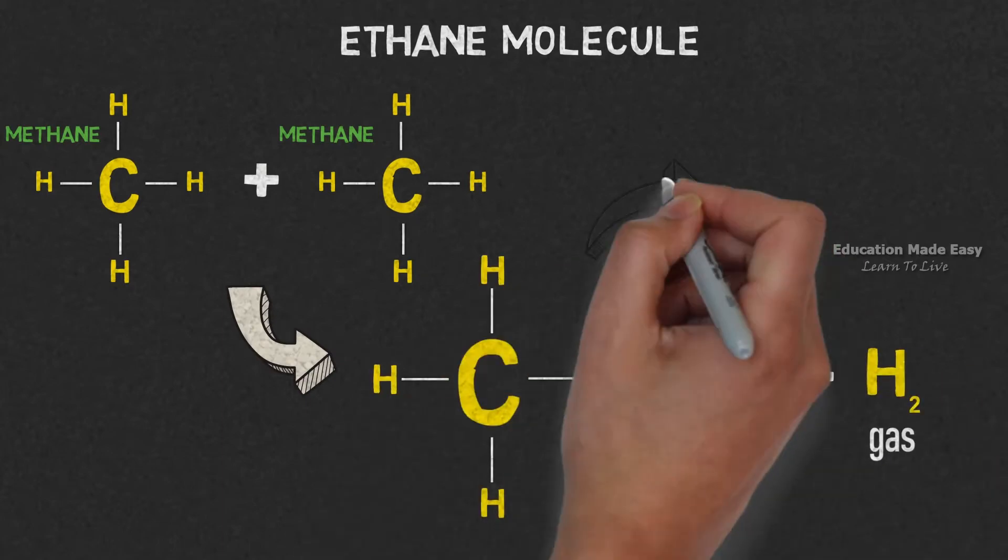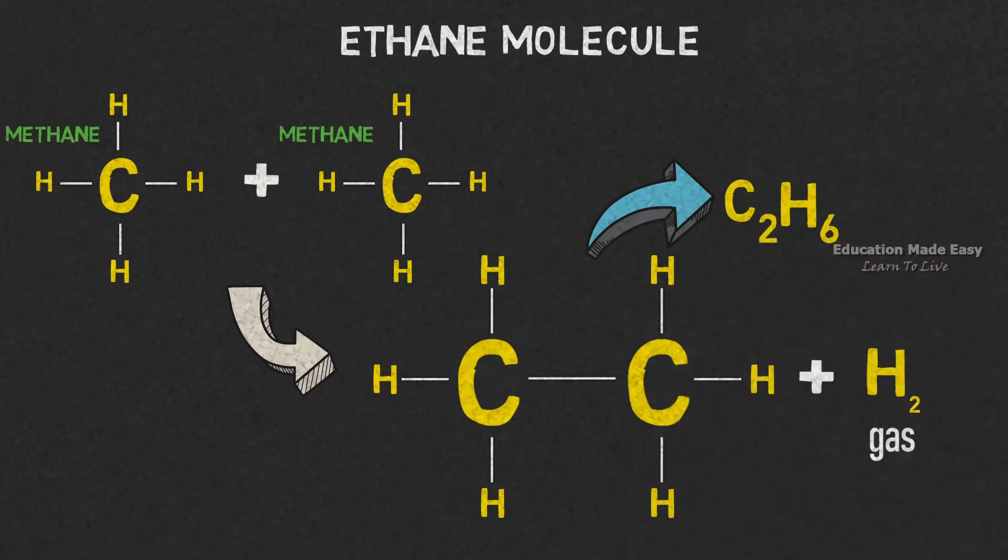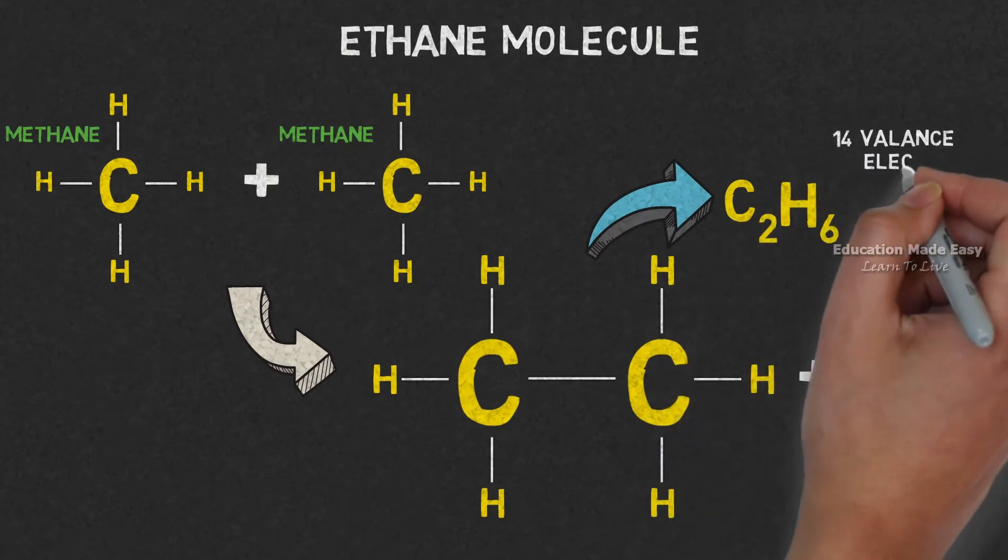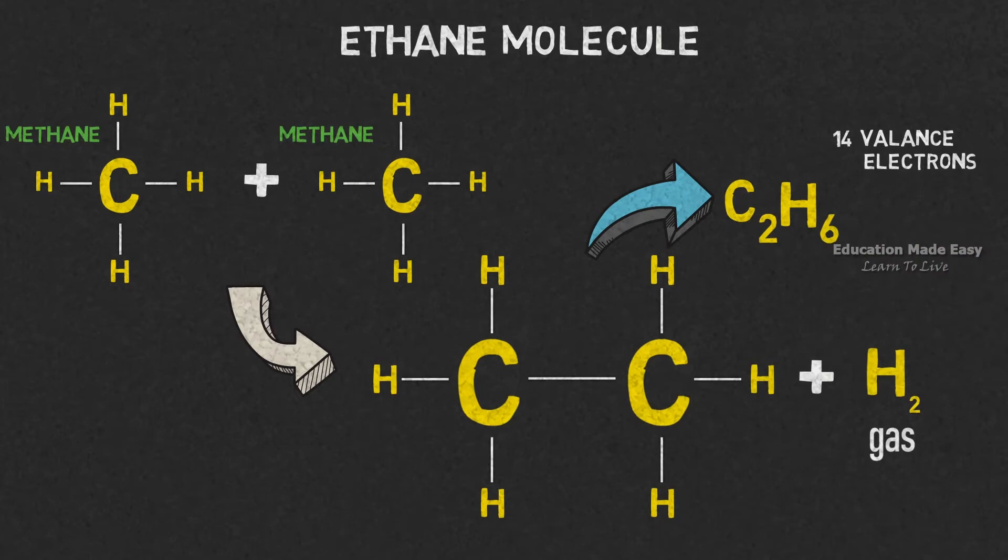The chemical formula of ethane is C2H6. The ethane molecule has 14 valence electrons, 3 on each carbon atom and 1 on each hydrogen atom.